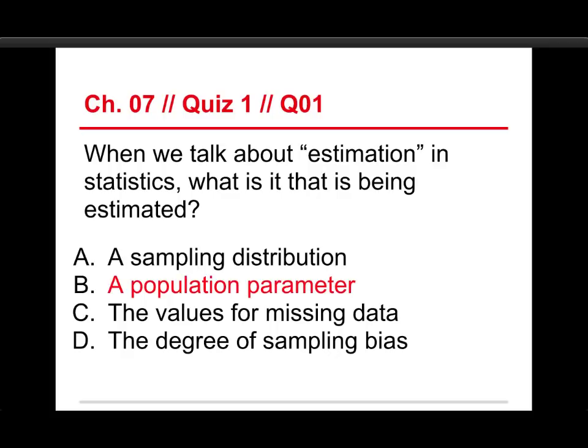The answer in this case is a population parameter. I'll show you that in a second. But a sampling distribution is not something that's estimated, it's something that's used as a way of getting the standard errors and the inferential procedures. The values for missing data, that's an important topic, but not something we're going to address in this course. And the degree of sampling bias, again, that has more to do with research methodology.